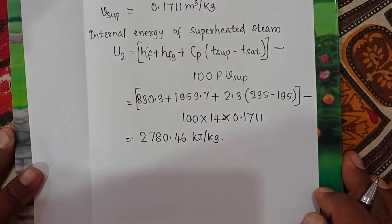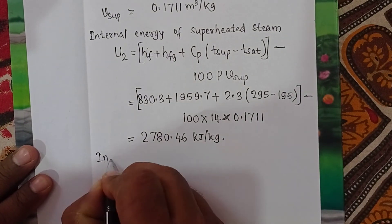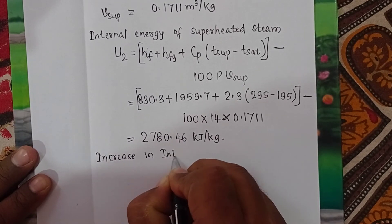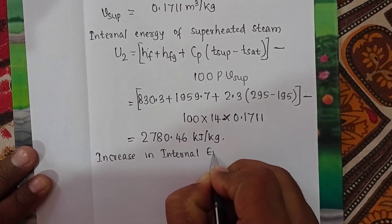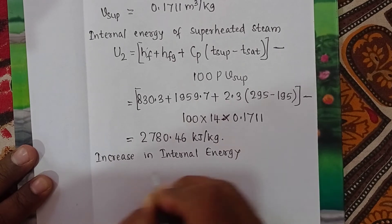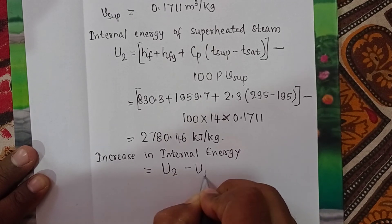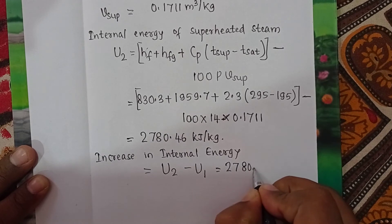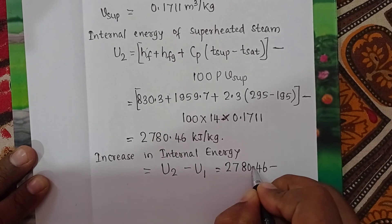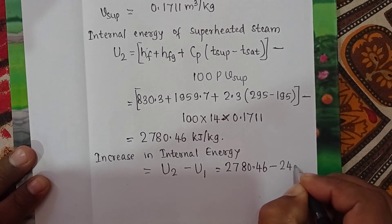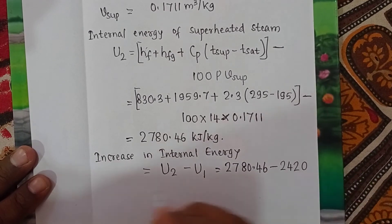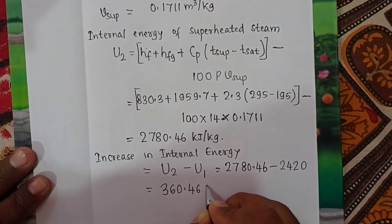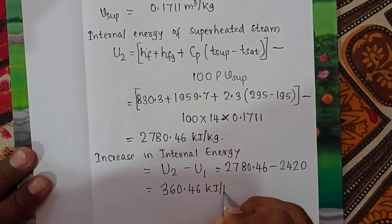Now we find the increase in internal energy, given by U2 − U1. That is 2780.46 − 2420 = 360.46 kJ/kg. This is the answer to the second part of the problem.